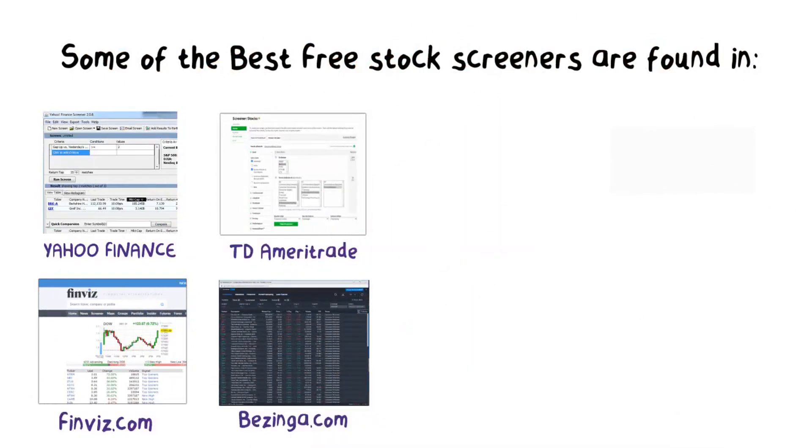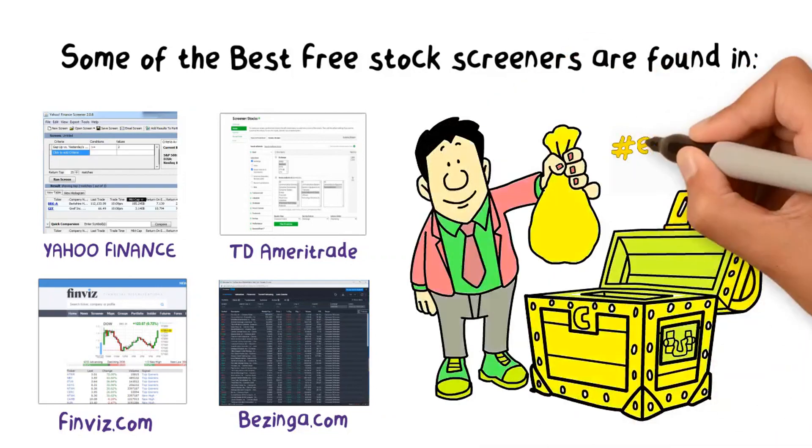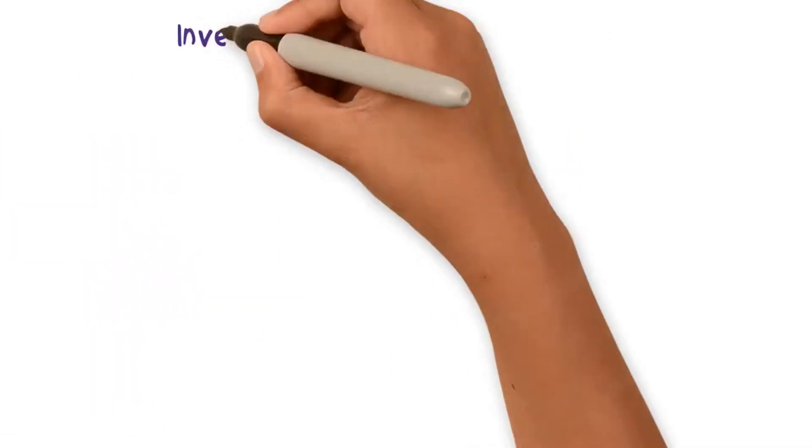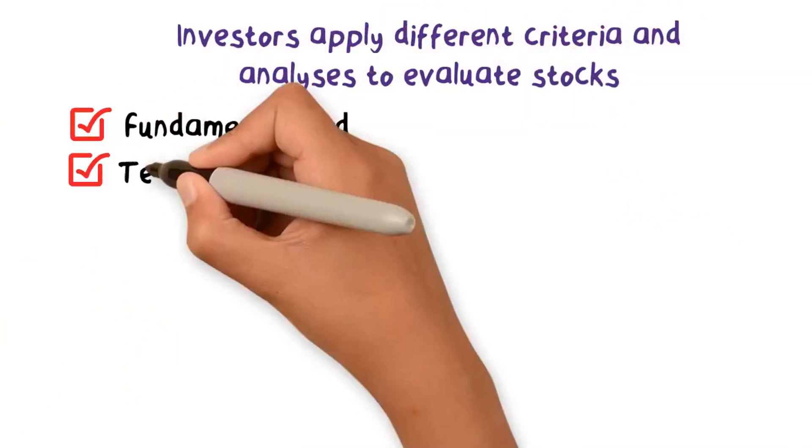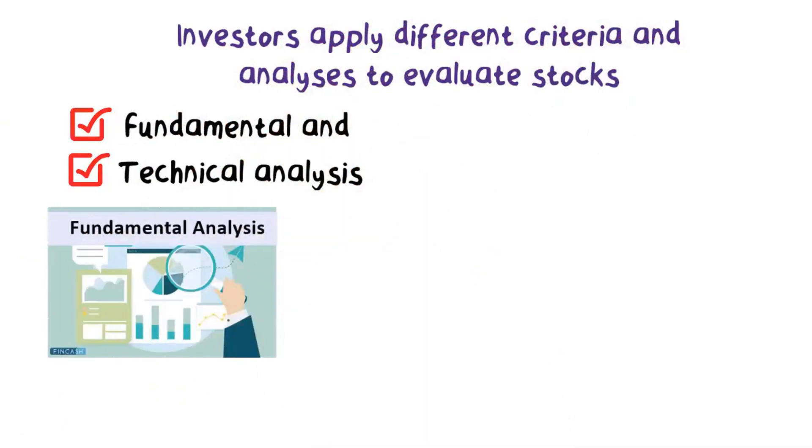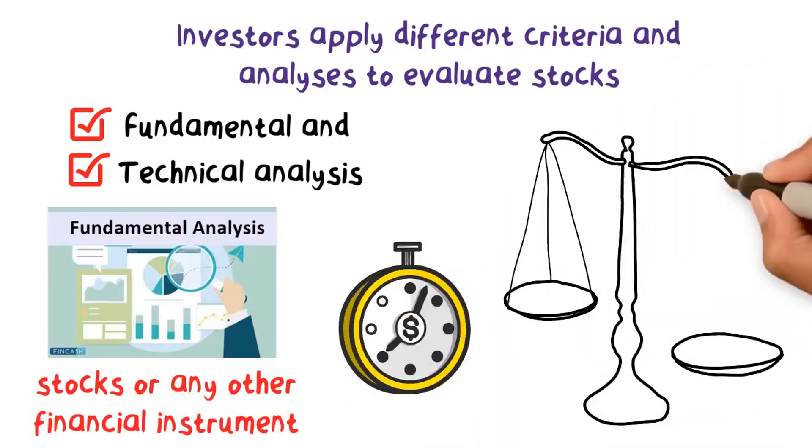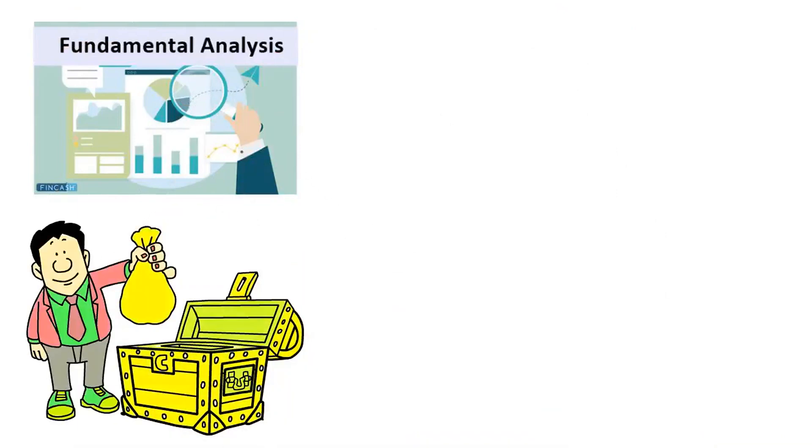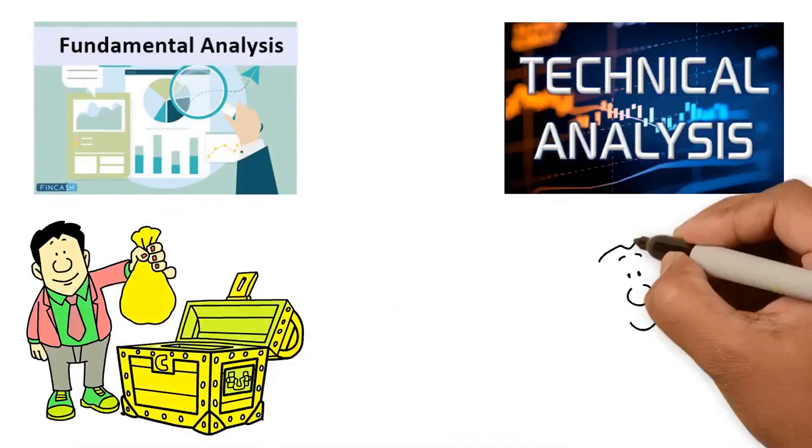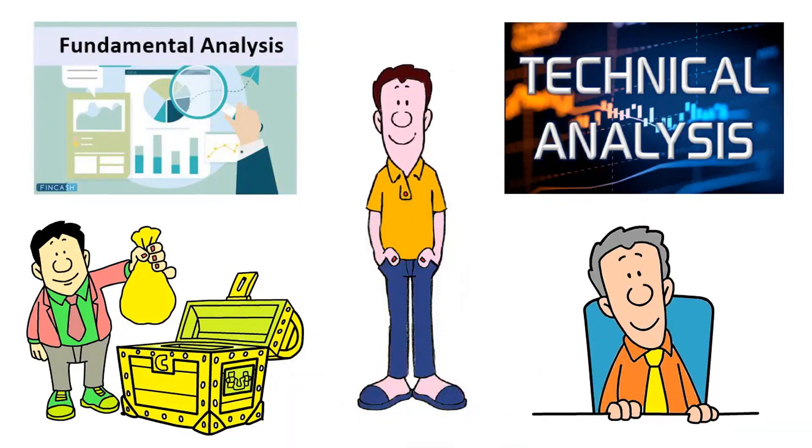Okay, now we know how to pick stocks. Let's talk about how investors evaluate stocks. Investors apply different criteria and analysis to evaluate stocks such as fundamental and technical analysis. Fundamental analysis evaluates stocks or any other financial instrument based on their intrinsic value by studying related economic and financial factors. Fundamental analysis is more used by long-term investors, while technical analysis is used more by traders, day and swing traders. Technical analysis is the study of historical market data including price and volume to predict future market behavior.